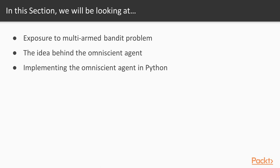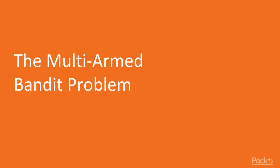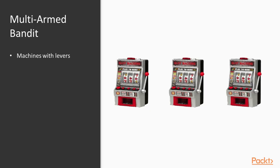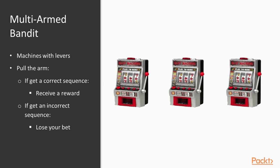And the last topic is implementing the Omniscient agent in Python. Let's start talking about the multi-armed bandit problem and A-B testing. Multi-armed bandit is just a fancy name for slot machines with levers — a gambling machine that you bet and play. The game is really simple: you bet a coin and pull the lever. If the combination is correct, you receive a reward; if not, you lose your coin.